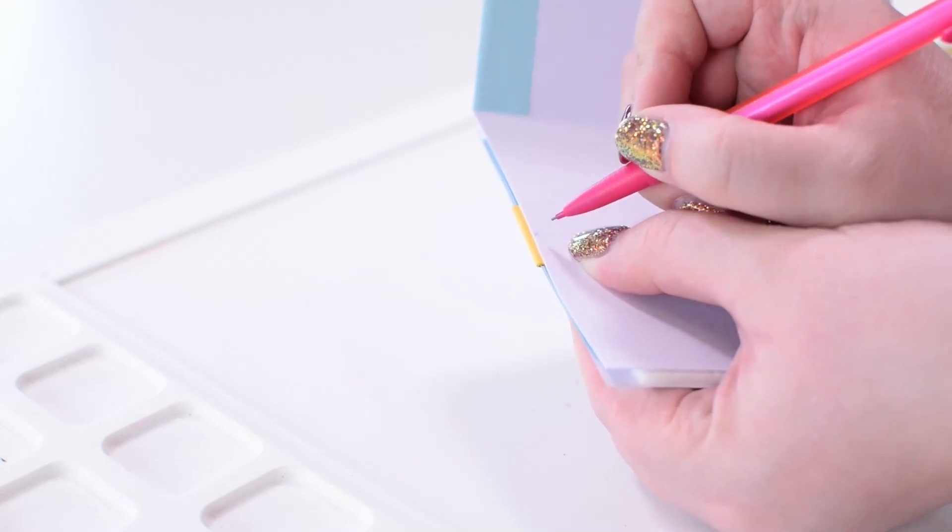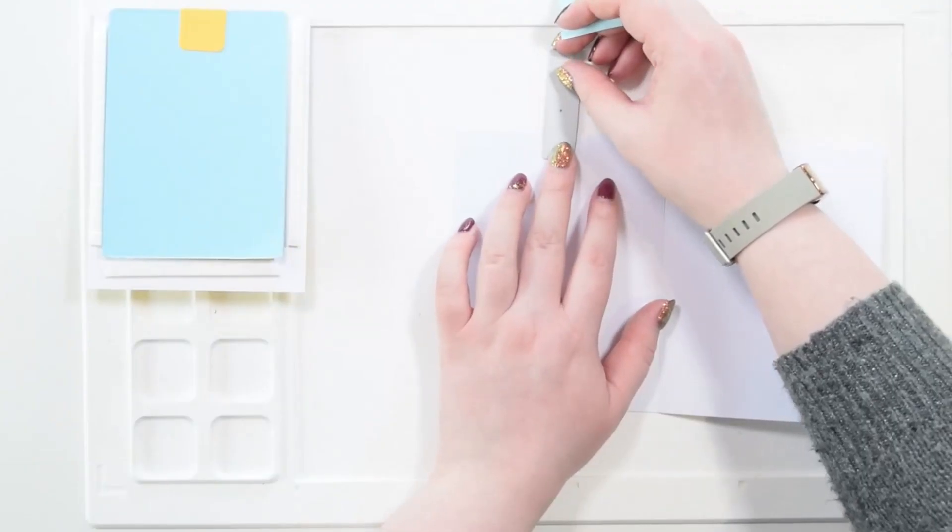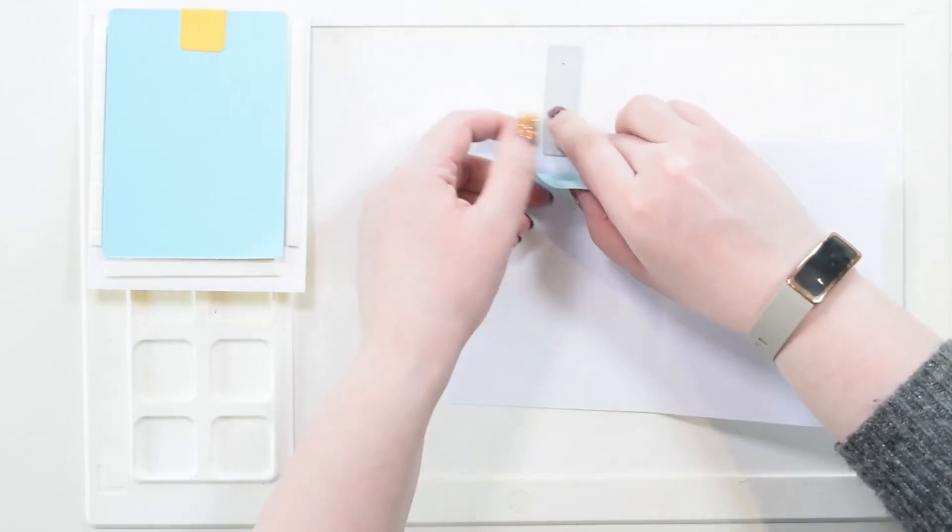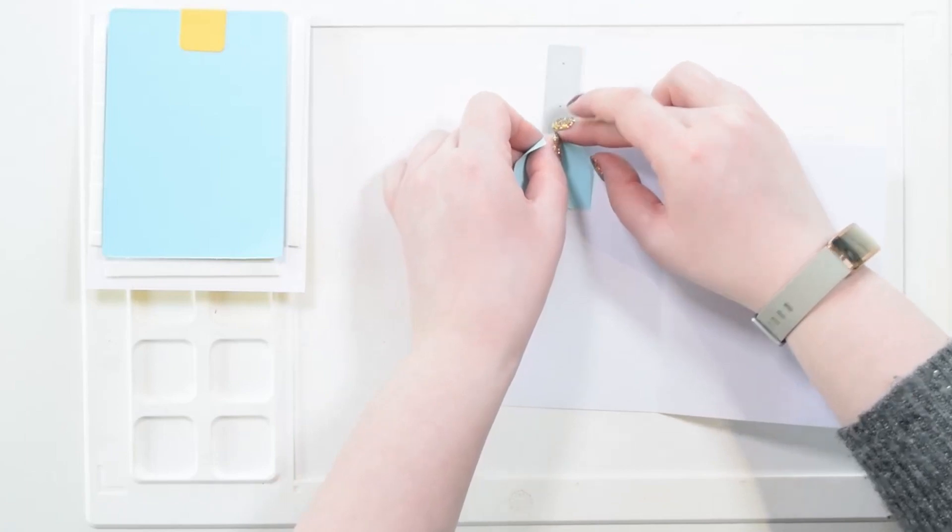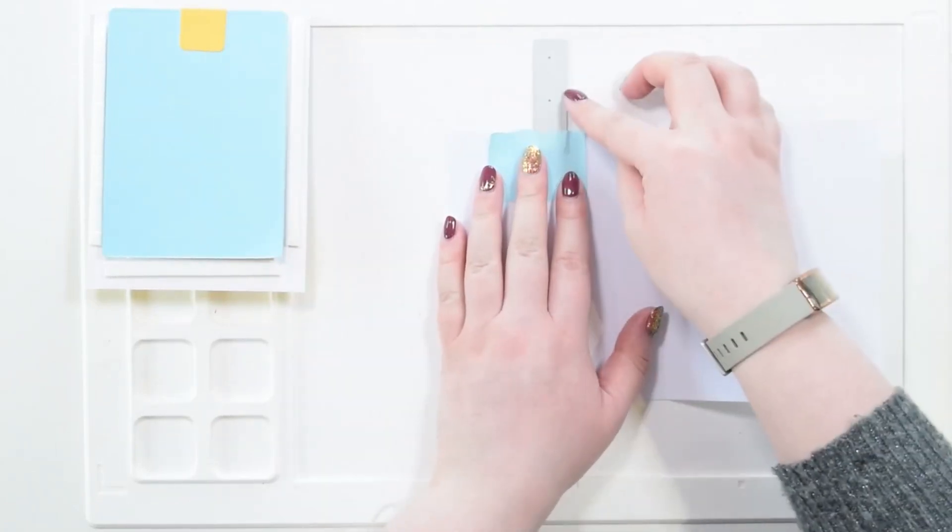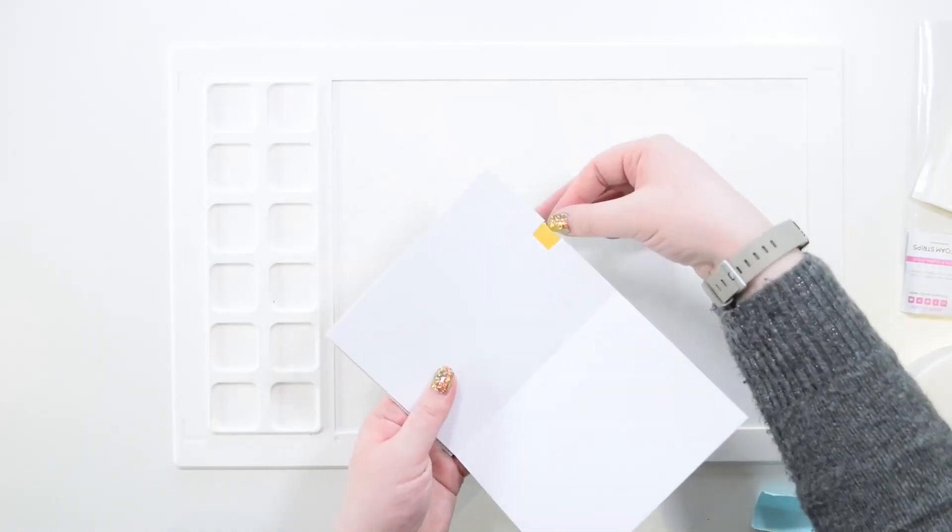I'm marking with a pencil the location of this pull tab section on my card blank because I want to do something a little bit extra. I've taken this rectangular shaped die from the slimline pull tab dies and I'm just going to create a little cut-out notch to make it easier for the recipient to access the pull tab.